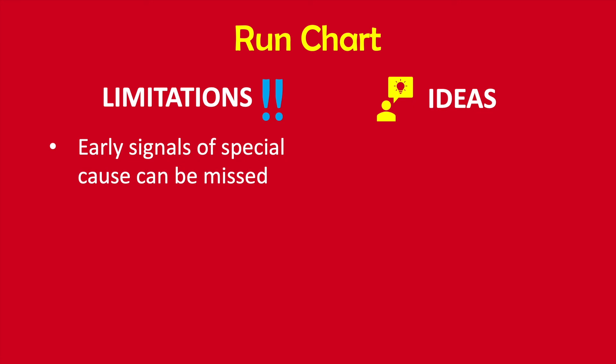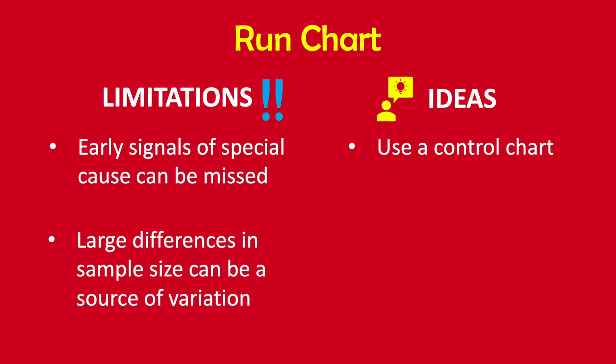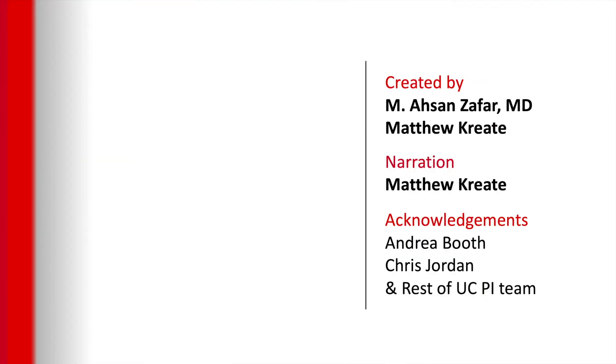While run charts are easy, quick to make, and simple to understand, they have a couple of limitations. First, some special causes may not be obvious on a run chart — they can be noticeable earlier on a control chart, so there is a chance of missing early signals. Second, some variation can occur on a run chart when there's too much variation in the sample size of each data point. When using a control chart, the variation in sample size is taken into account in the control limits. So when using run charts, we should try to have consistent sample sizes. There are countless applications where visual data display using run charts can help us make better decisions to improve outcomes.